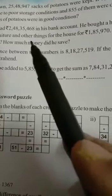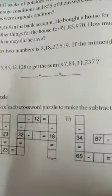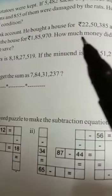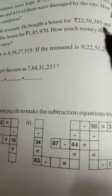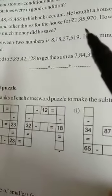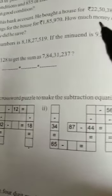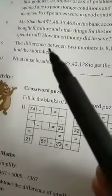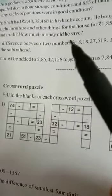He bought a house for Rs. 22,50,385 and bought furniture and other things for the house for Rs. 1,85,970. How much money did he spend in all and how much money did he save.